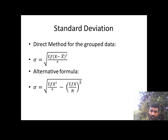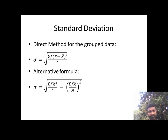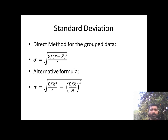Here, x² refers to the square of the x values, and fx² is the product of frequency and x². The total of fx² gives us sum of fx², and capital N is the total of the frequency. Now let me start solving a problem.